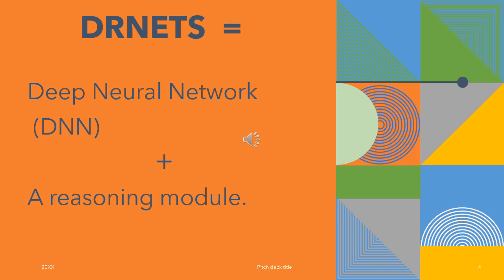For a very basic understanding of DRNets: DRNets are nothing but a combination of deep neural networks with a reasoning model. You have your typical deep neural network, also known as the DNN, and you add to that a reasoning module and then you get DRNets. This is just a simplistic way of understanding how DRNets work.